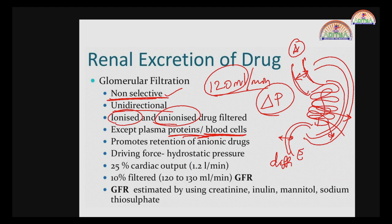No human excretes 1.2 liters every 10 minutes, which means the majority of the filtrate is being reabsorbed. Additional characteristic notes about glomerular filtration: it promotes retention of anionic drugs — charged, especially anionic drugs, are retained, while remaining drugs are eliminated. GFR can be estimated using creatinine, inulin, mannitol, or sodium thiosulfate, which help estimate the glomerular filtration rate.